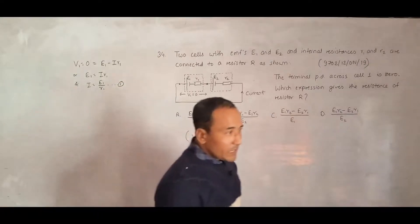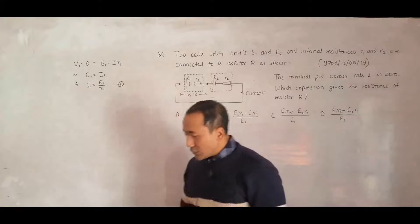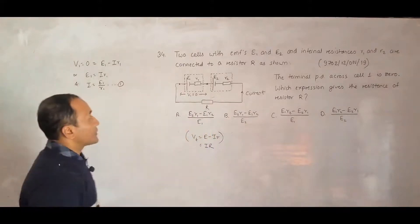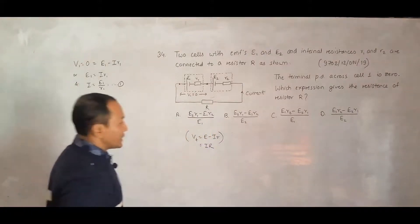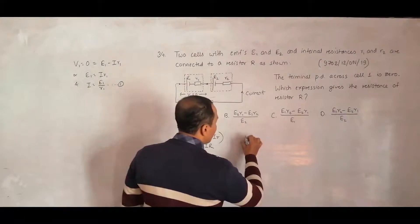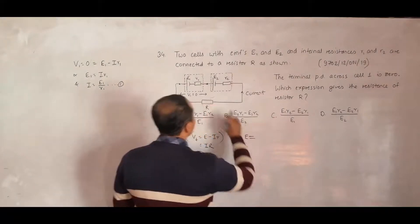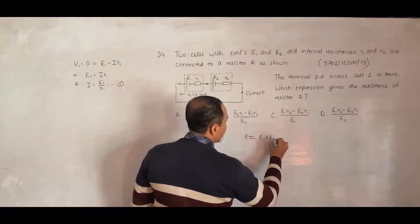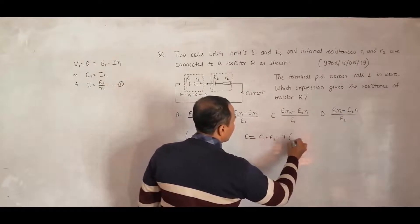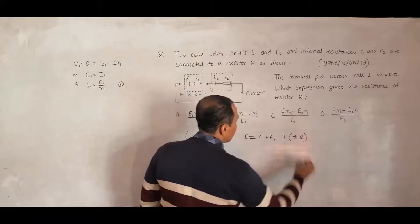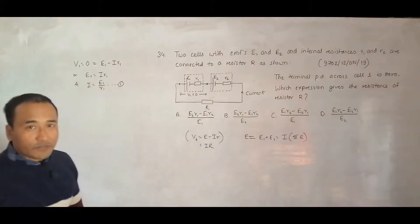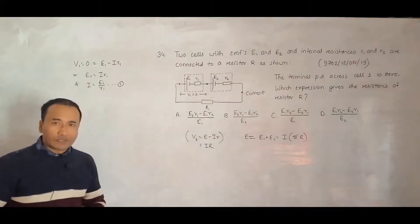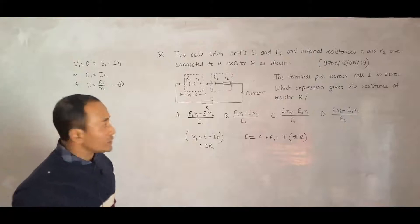This expression gave me I equals E1 by R1. Now, let us go for the whole circuit. For the whole circuit, the total EMF E, which is equal to E1 plus E2, is equal to current into total resistance in the circuit. Sum of EMFs equals sum of the potential difference. It's simple Kirchhoff's law.